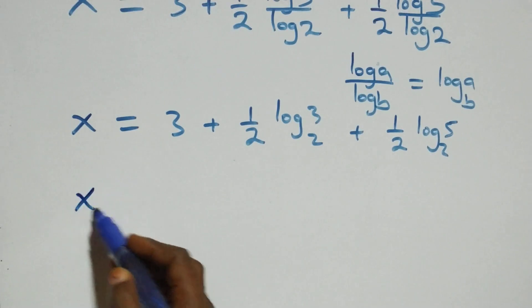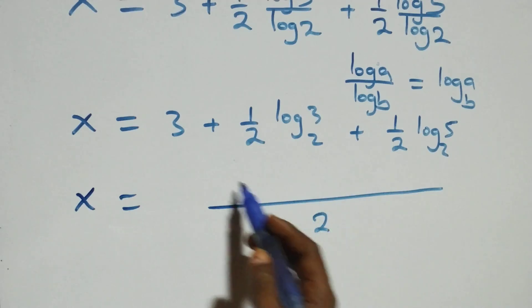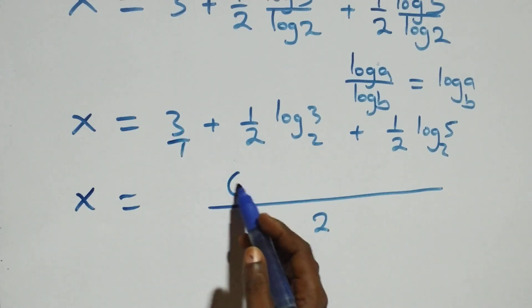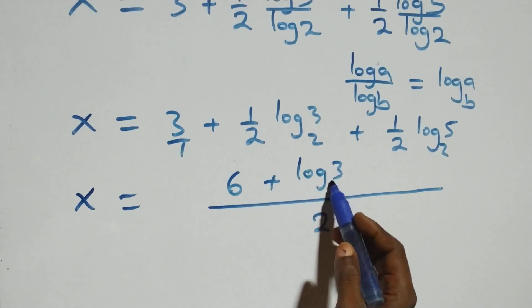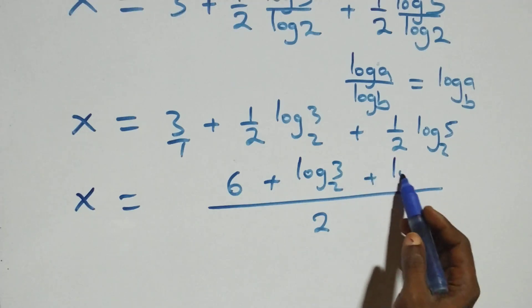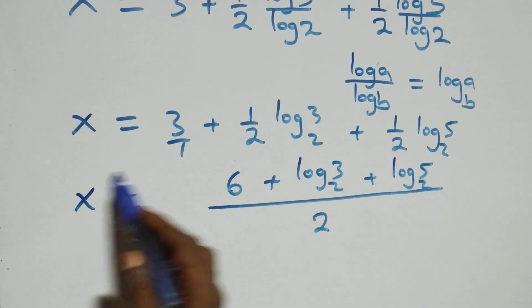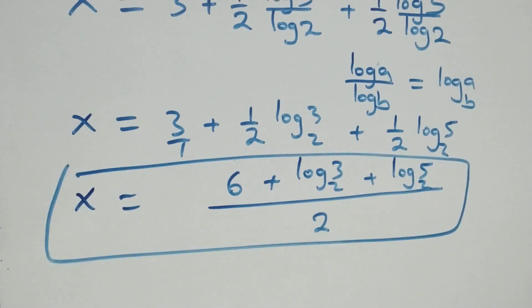Bringing this together as a single fraction with denominator two, we get x equals six plus log 3 base 2 plus log 5 base 2, all over two.